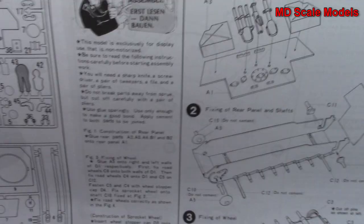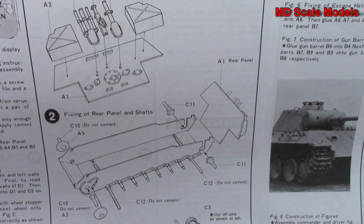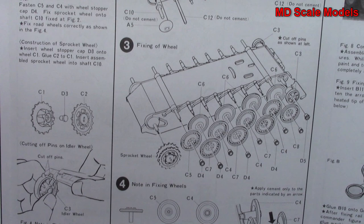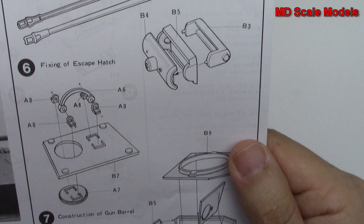And we start off with the main body. The shell. Wheels are going on. And then we move to our main gun and our hatch and we build the turret.